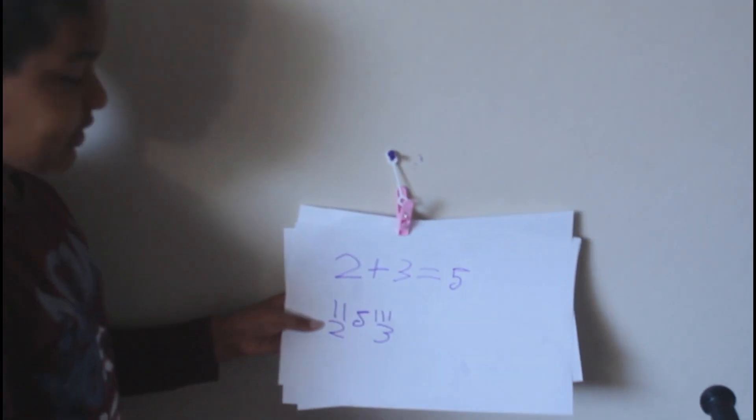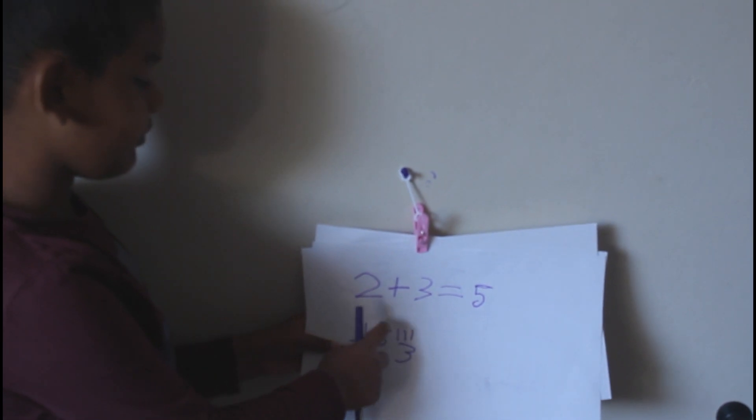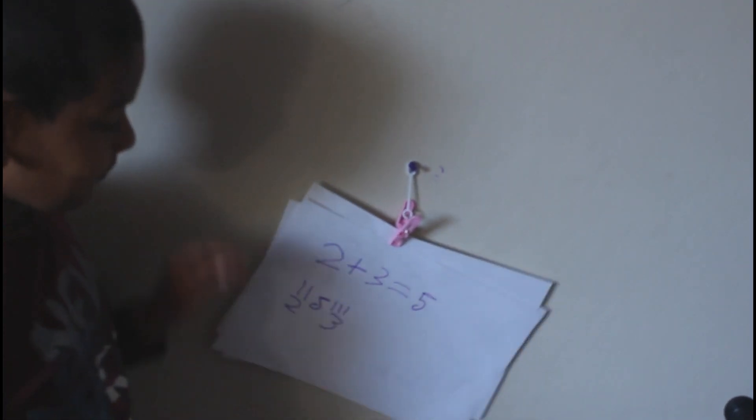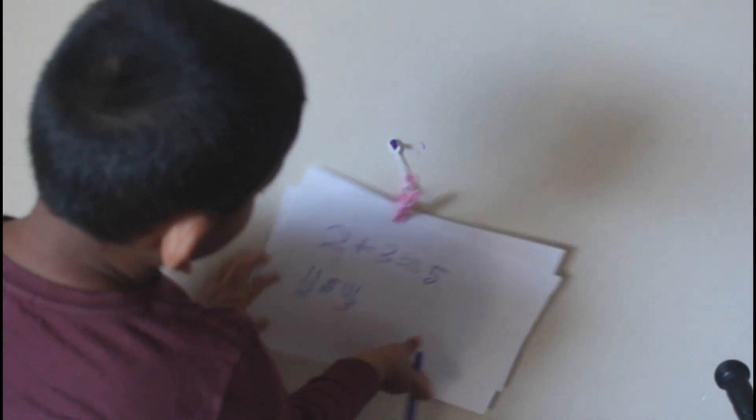And we're going to do math today, and it will be easy math. Like our videos! First, we're going to start with this. Two plus three equals five. Now let's count: one, two, three, four, five. Five. It equals five. Let's go on to the next one.